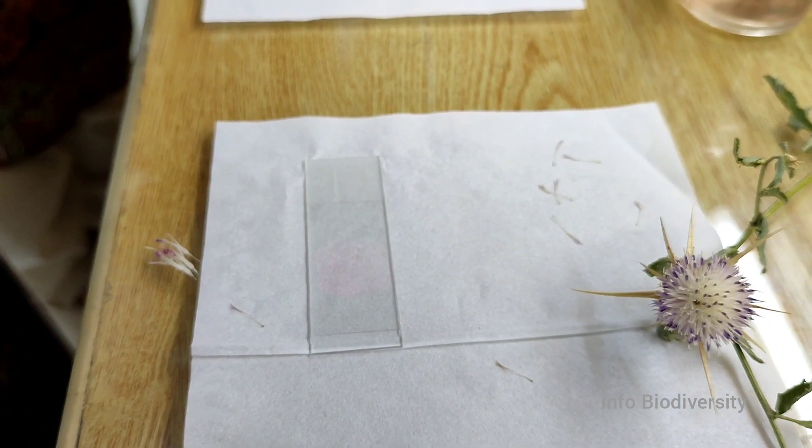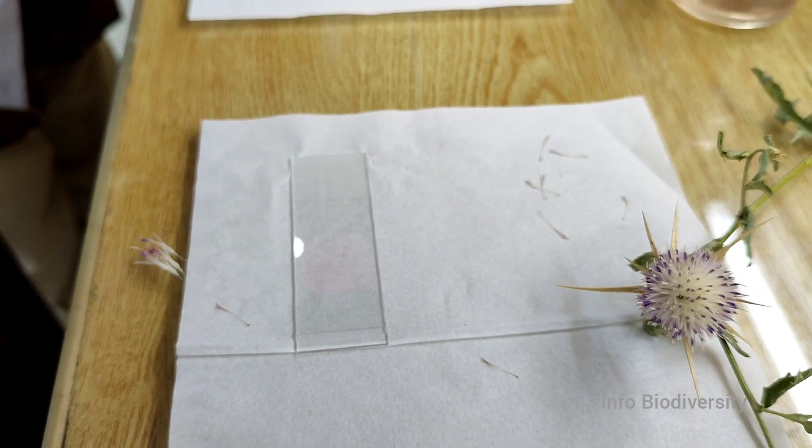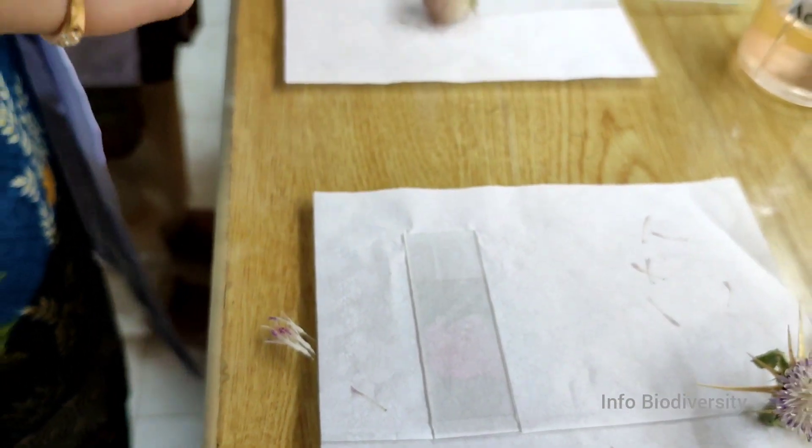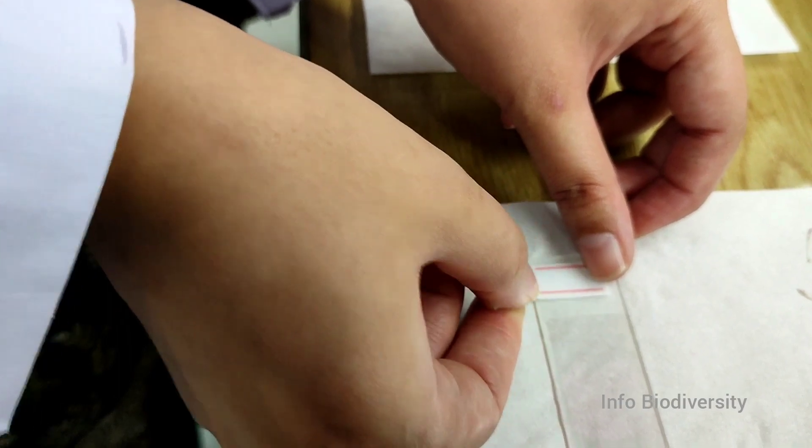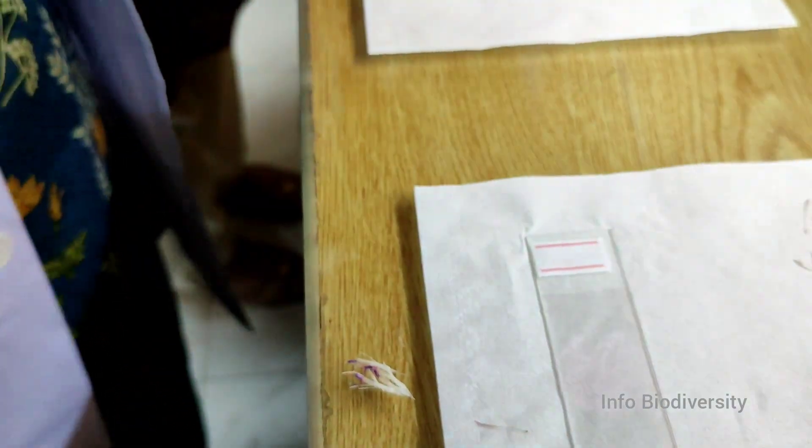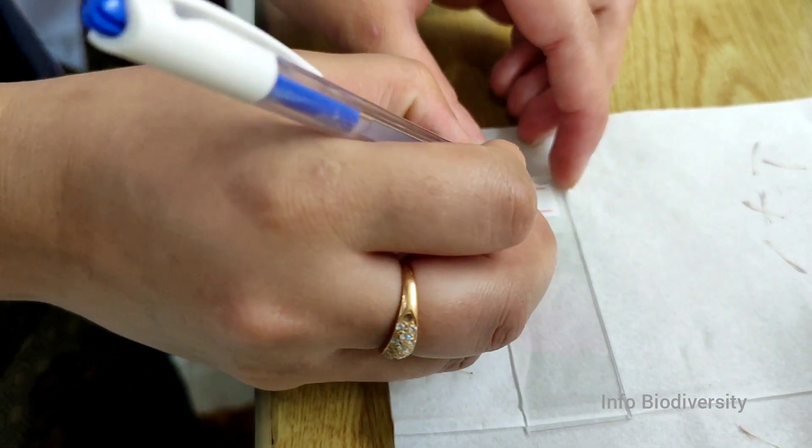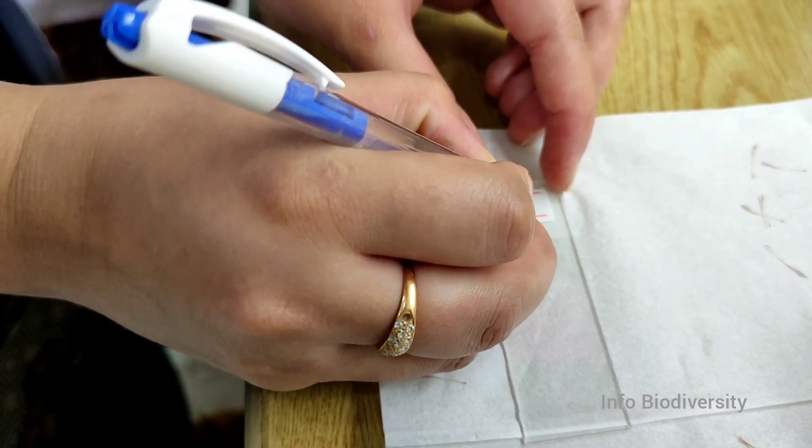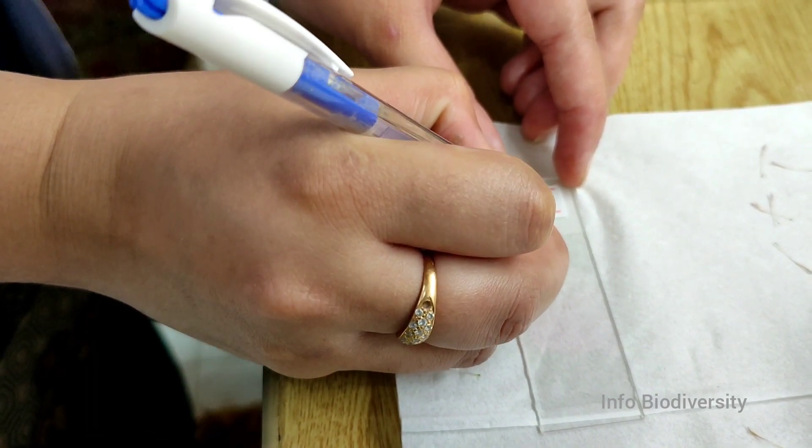Now, this is the prepared slide by the flowers of Centaurea iberica, also called Centaurea calcitrapa, which belong to family Compositae or Asteraceae. Now, it is the time to label this slide. You can put a code or a botanical name of the plant or you can use a number in your diary.